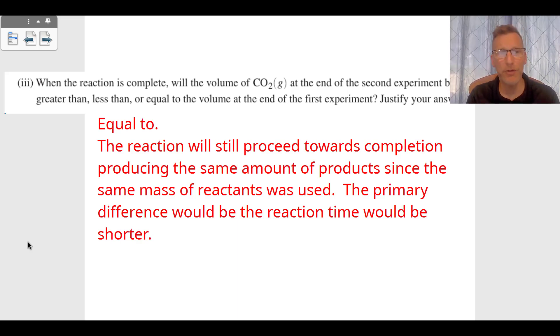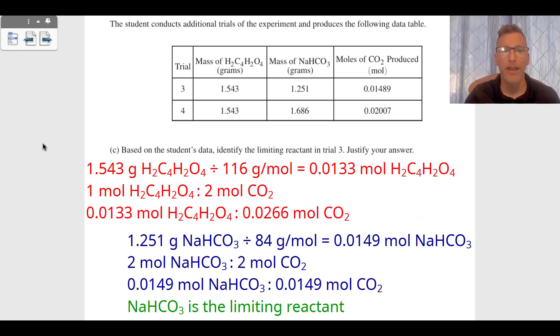Then we get to B3, which asks: when the reaction is complete, will the volume of CO₂ gas at the end of the second experiment be greater than, less than, or equal to the first? We're going to say it's equal to. The reaction will still proceed to completion, producing the same amount of products since the same mass of reactants was used. We haven't changed the mass; we still have a limiting reactant. The primary difference would be the reaction time would be shorter.